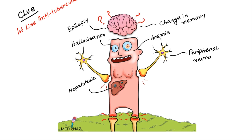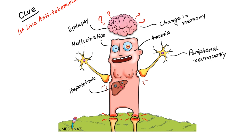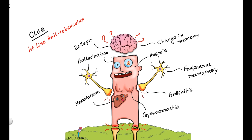Peripheral neuropathy, gynecomastia, and arthritis, which specially involves the upper limb and is also known as shoulder-hand syndrome. Now pause the video and write your answer in the comment section below.